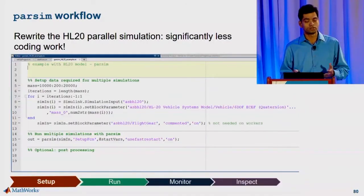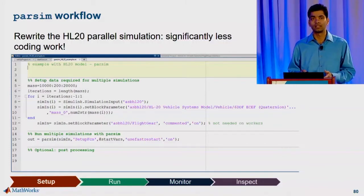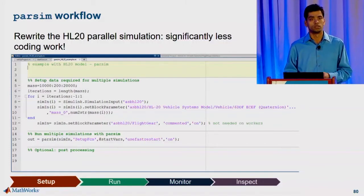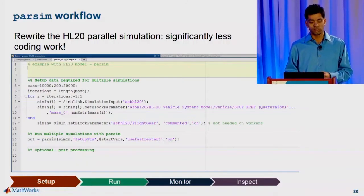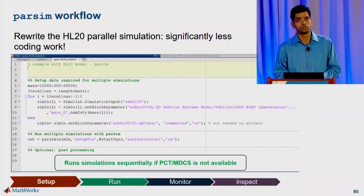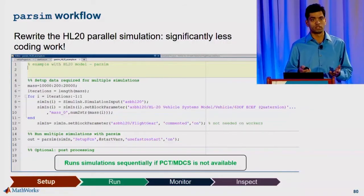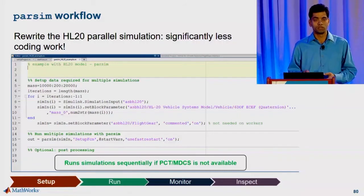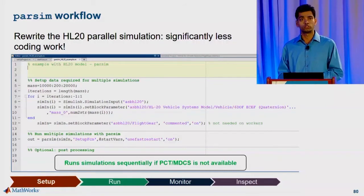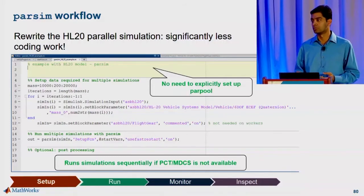So the code I showed you earlier — this is what it's going to look like now. There's significantly less coding work; it's less than 10 lines of code. And the good thing is that if you do not have access to the Parallel Computing Toolbox or the MATLAB Distributed Computing Server, these simulations will still run, but they'll just run sequentially. But if you do have access to the Parallel Computing Toolbox, there's a lot of automation — no need to explicitly specify the parallel pool.